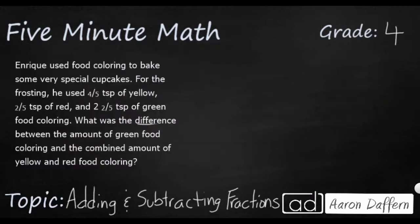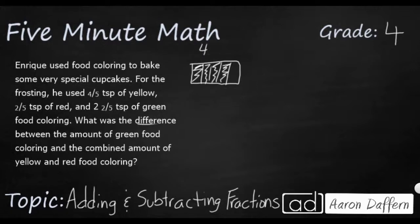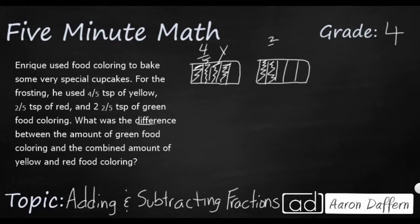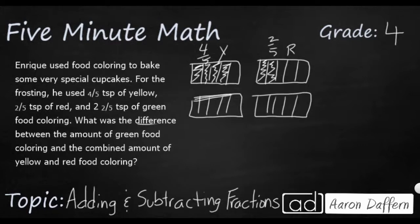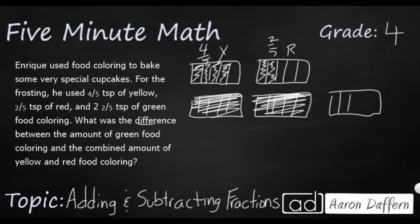Let's look at a different example. We have a new problem where Enrique is doing some baking. He is putting together four-fifths of yellow, so I'm just going to draw a picture of my four-fifths and label it Y. He has two-fifths of red, so let me draw two-fifths and label that as two-fifths red. And he's got two and two-fifths of green, so I'm going to put my two whole boxes shaded all the way in, and then two-fifths — that's this whole row right there.